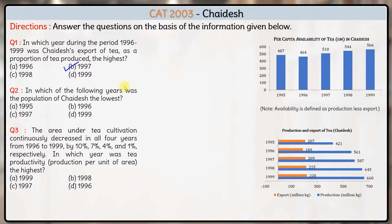Now coming to the second question: in which of the following years was the population of Chayadesh the lowest? We have to figure out the population in 95, 96, 97, and 99. Now how can we figure out the population? Where do we have population data? The per capita availability is 487 grams, which equals total consumption divided by total population.